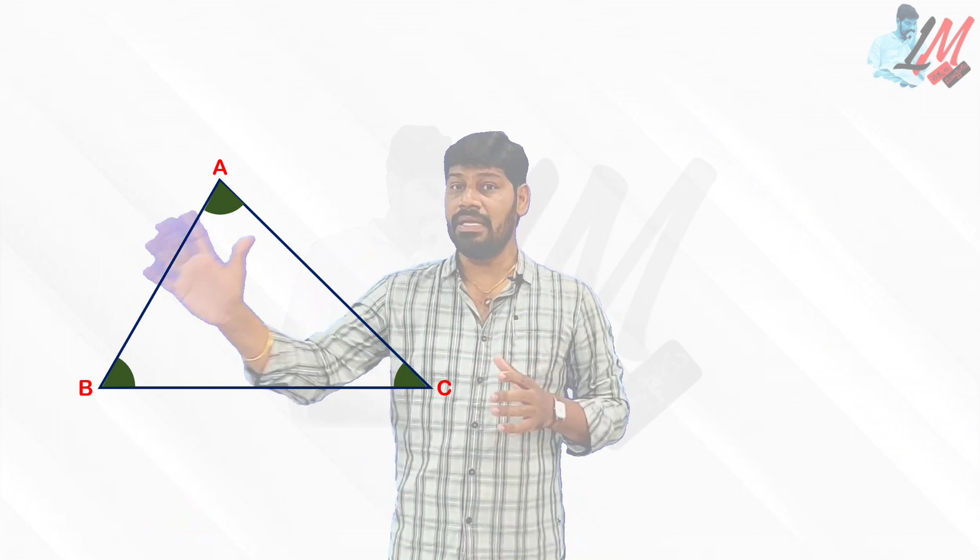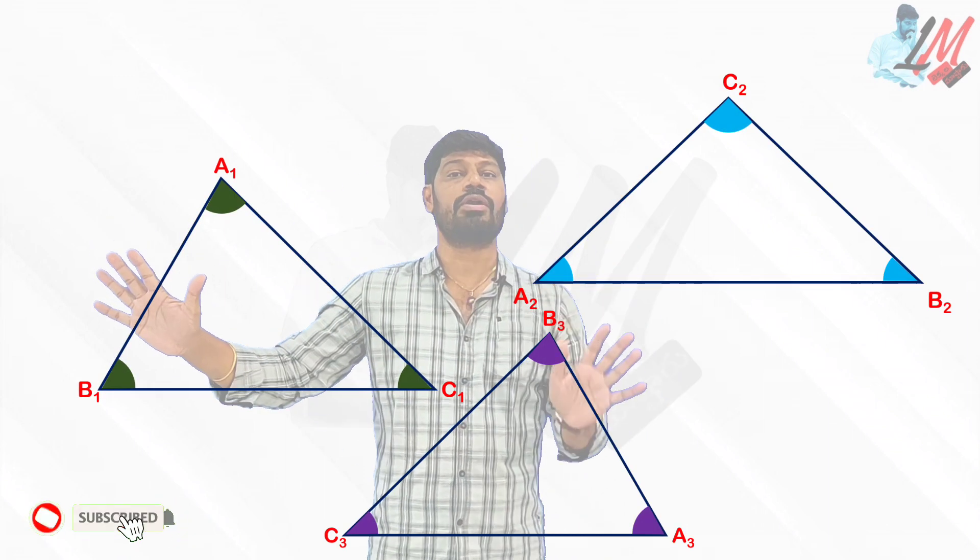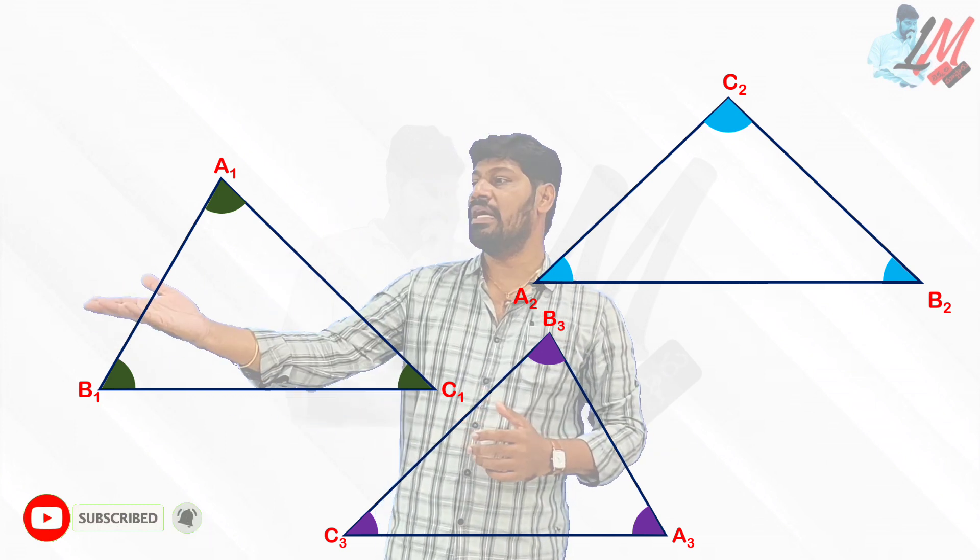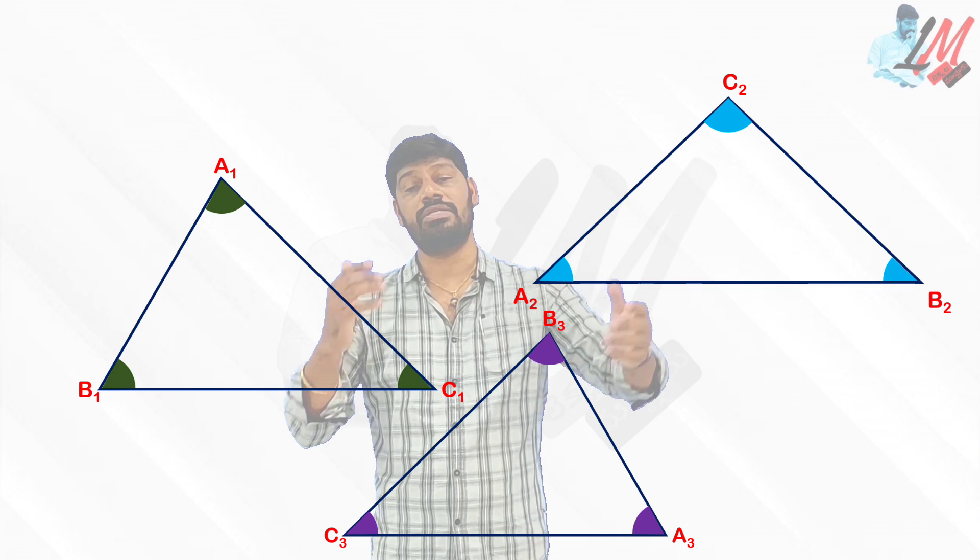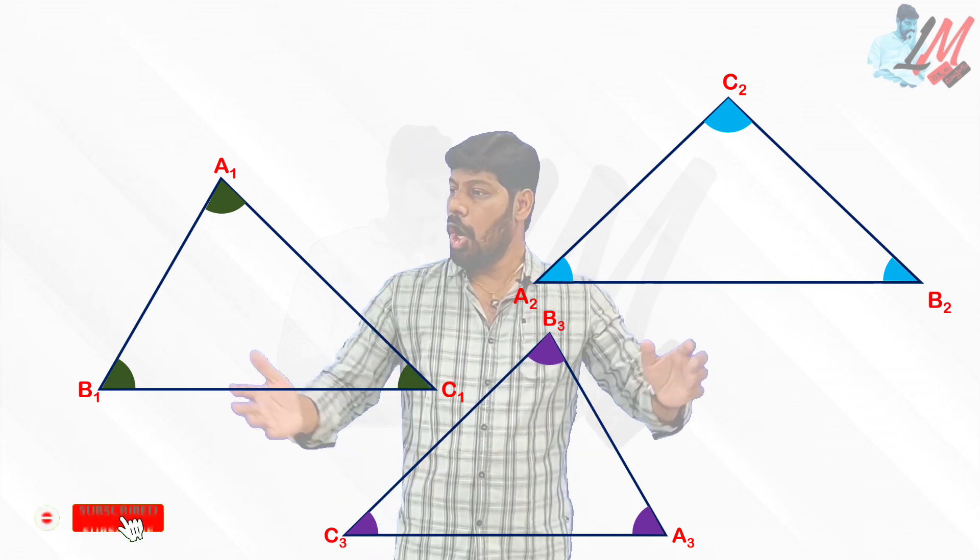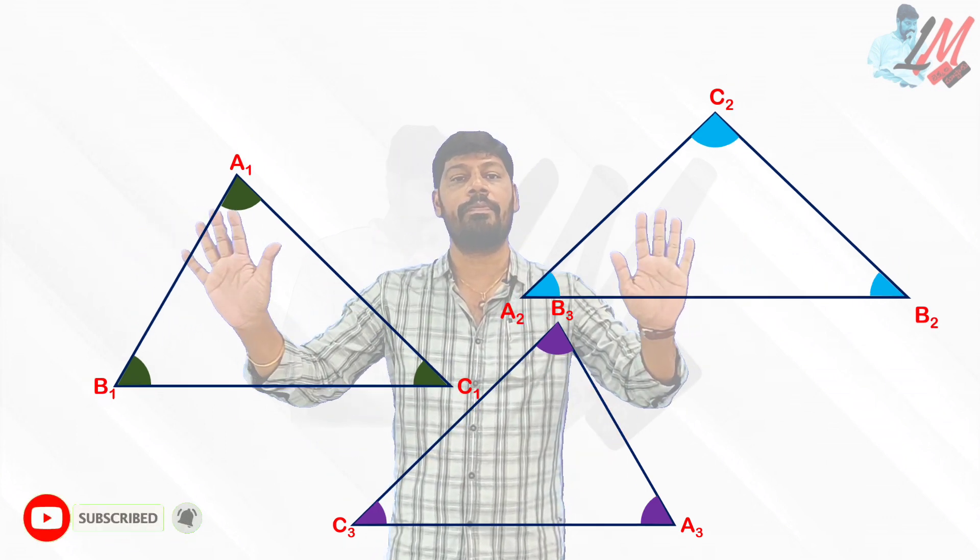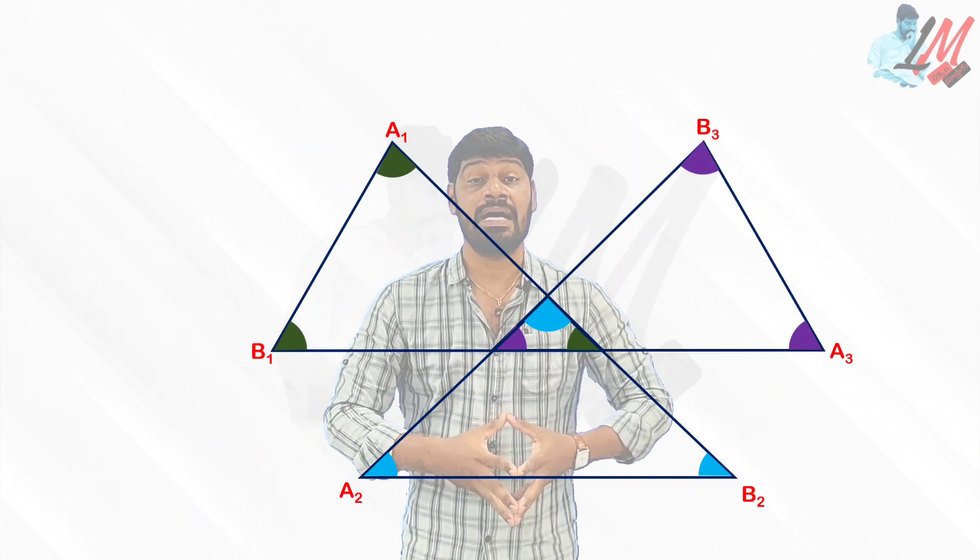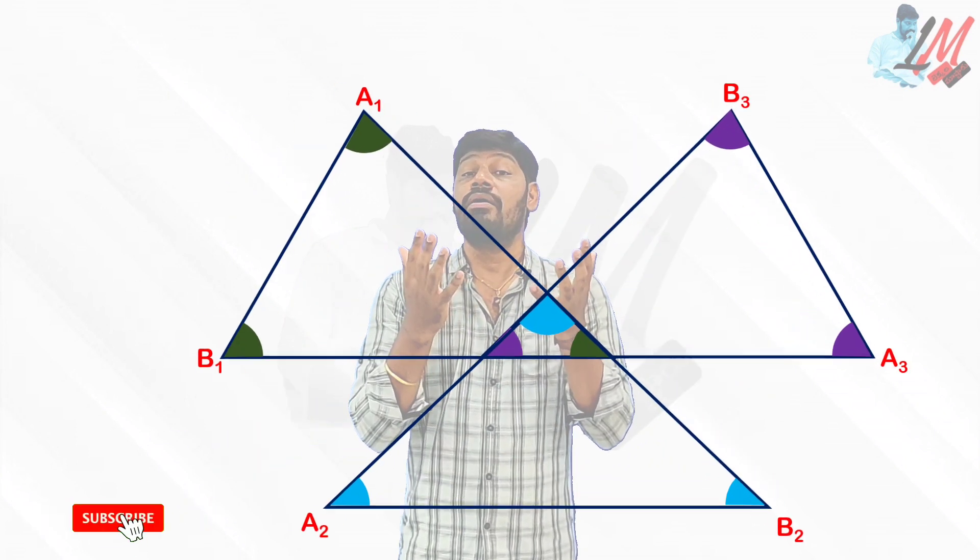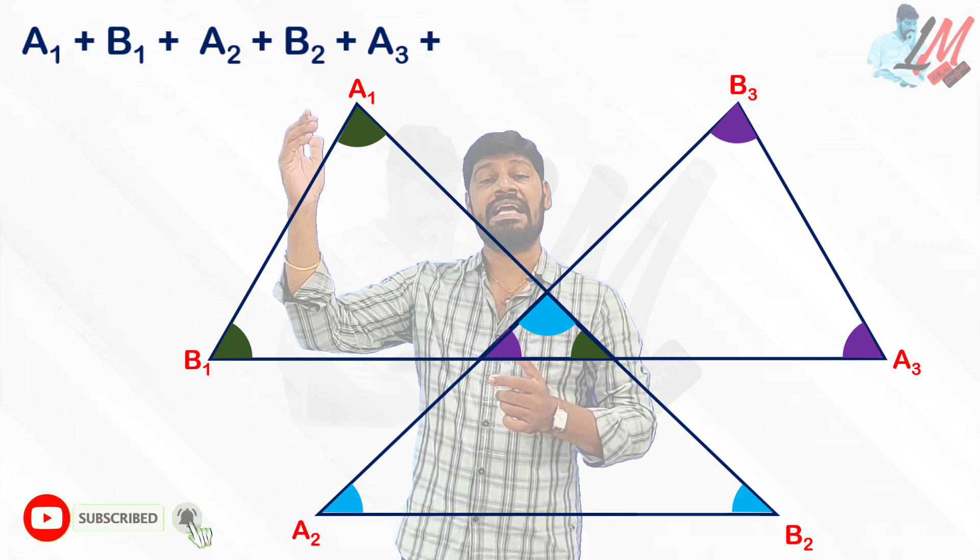But here two more similar triangles were taken. Let us assume this triangle is A1 B1 C1, this is A2 B2 C2, and this is A3 B3 C3. All three triangles were placed like this to form a different figure, and we are asked to find out the sum of all six angles.